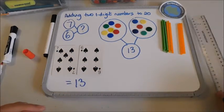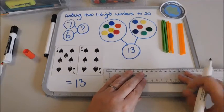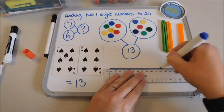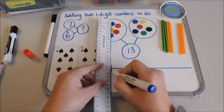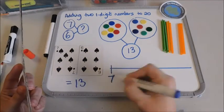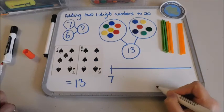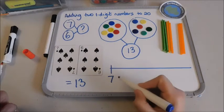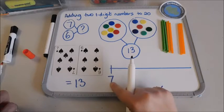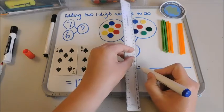Then we would move children on to using number lines. So I would draw my number line and I would put the largest number at the start of my number line, so I would put my seven there. Now I know that I want to add six on, but actually what I'm going to do is I'm going to say to the children, what would I need to add to that seven to actually get ten?